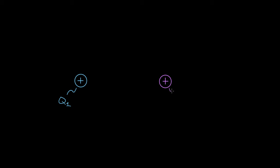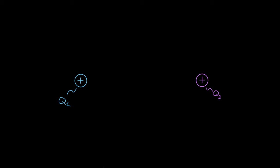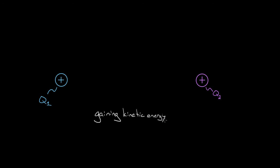Here's something that used to confuse me. If you had two charges — we'll call this one Q1 and this one Q2 — sitting next to each other, and you let go of them, they're gonna fly apart because they repel each other; like charges repel. So Q2 gets pushed to the right, and Q1 gets pushed to the left. They're gonna start gaining kinetic energy, start speeding up. But if these charges are gaining kinetic energy, where is that energy coming from? If you believe in conservation of energy, this energy had to come from somewhere. So where is this energy coming from? What is the source of this kinetic energy?